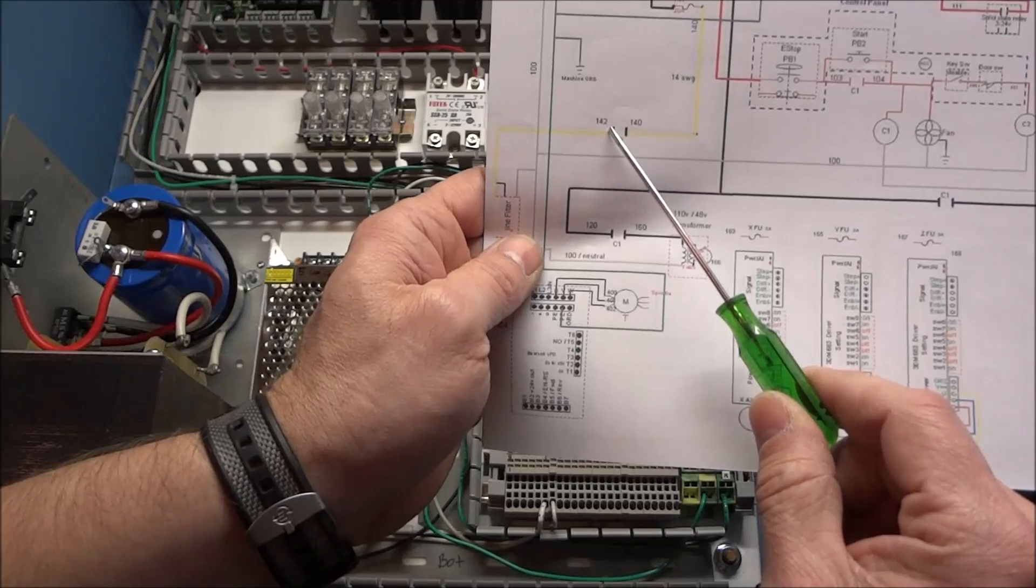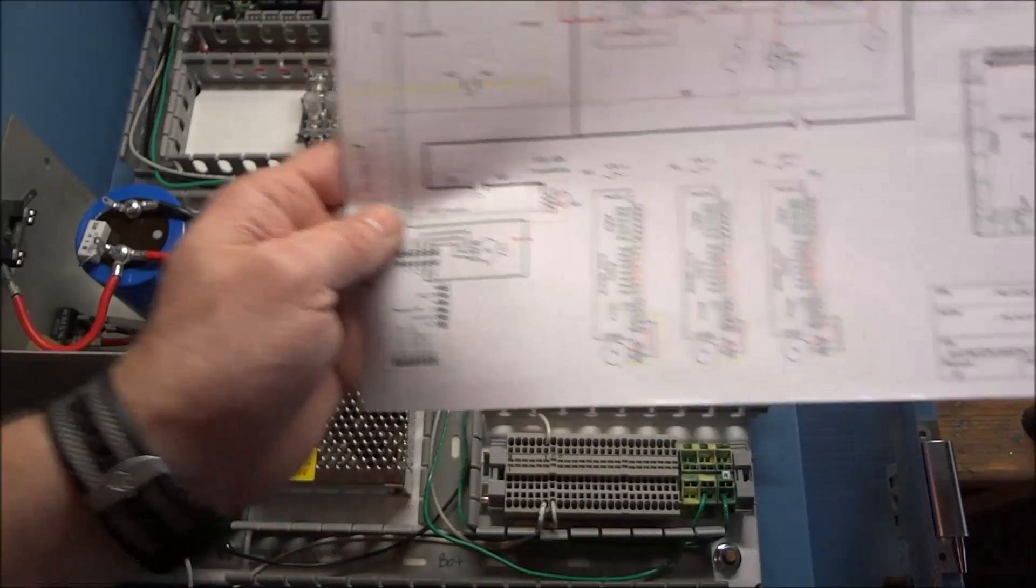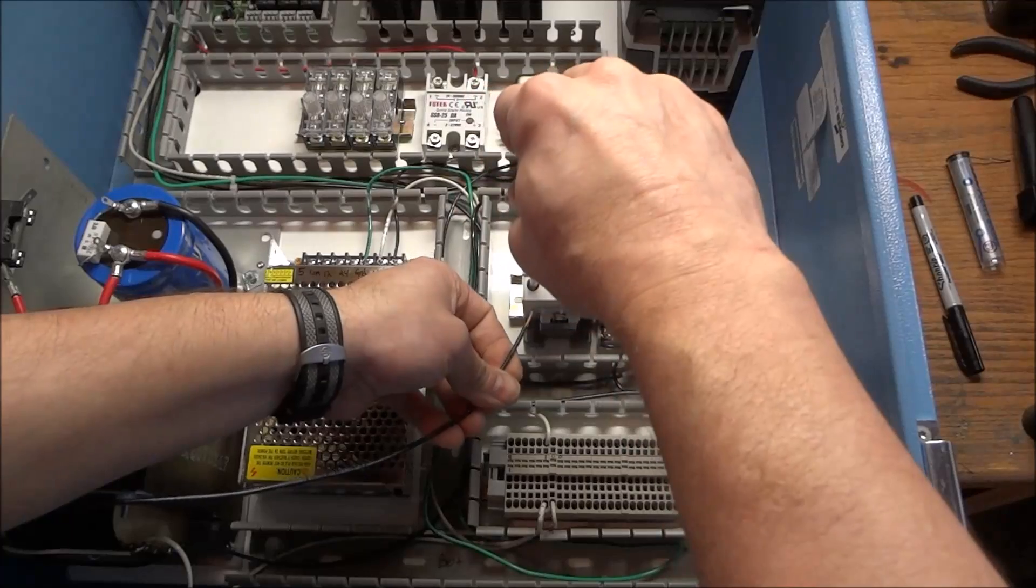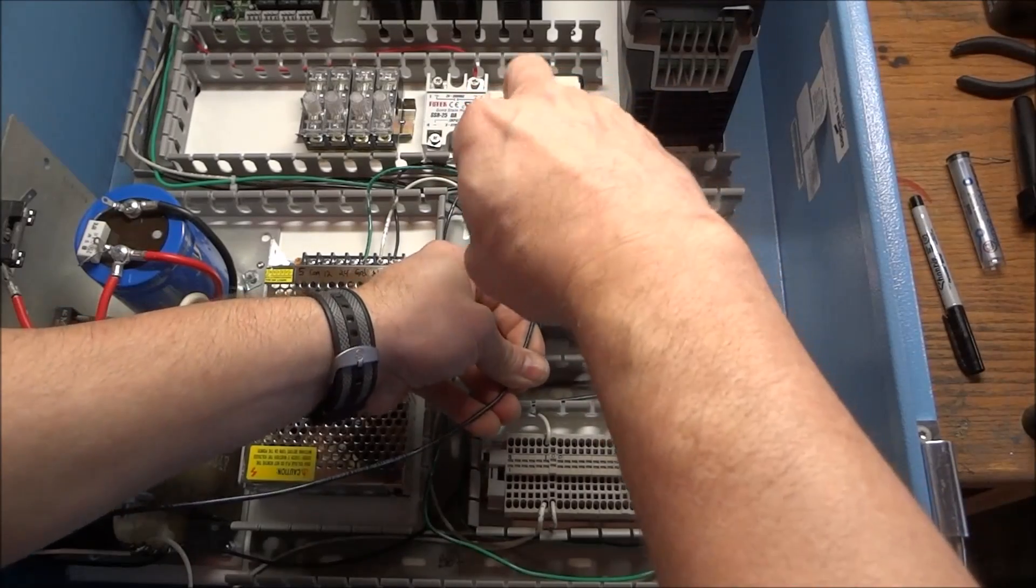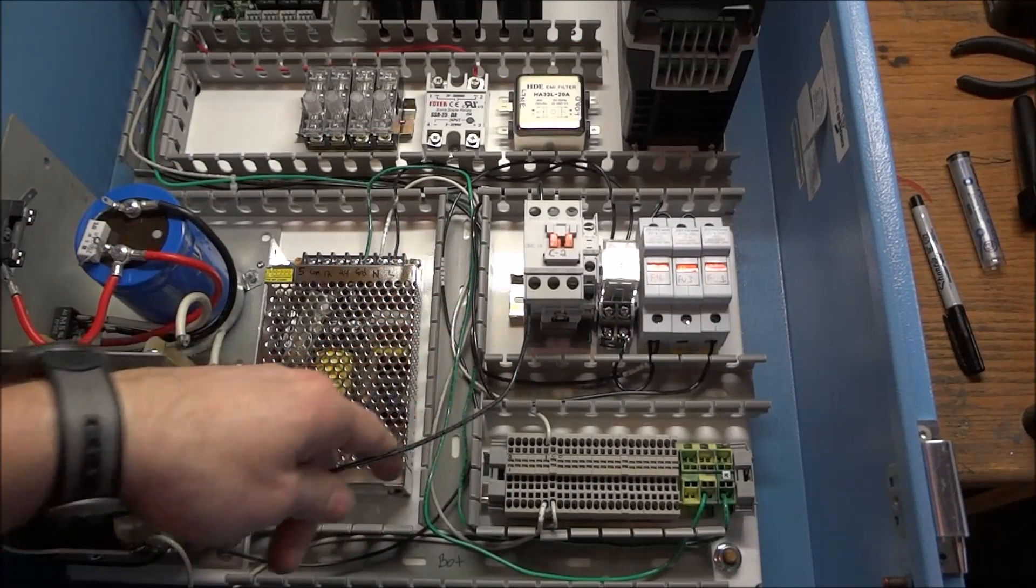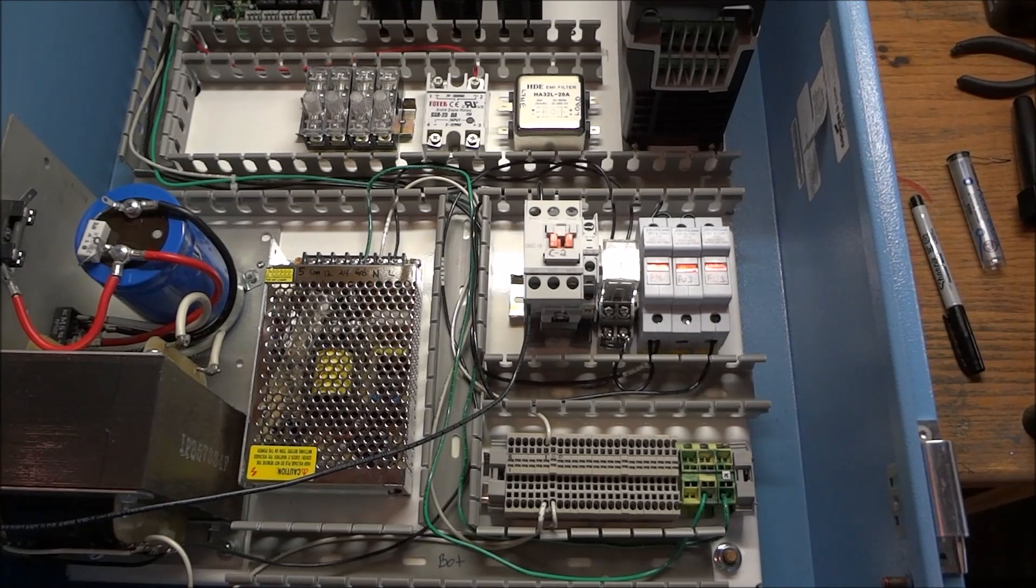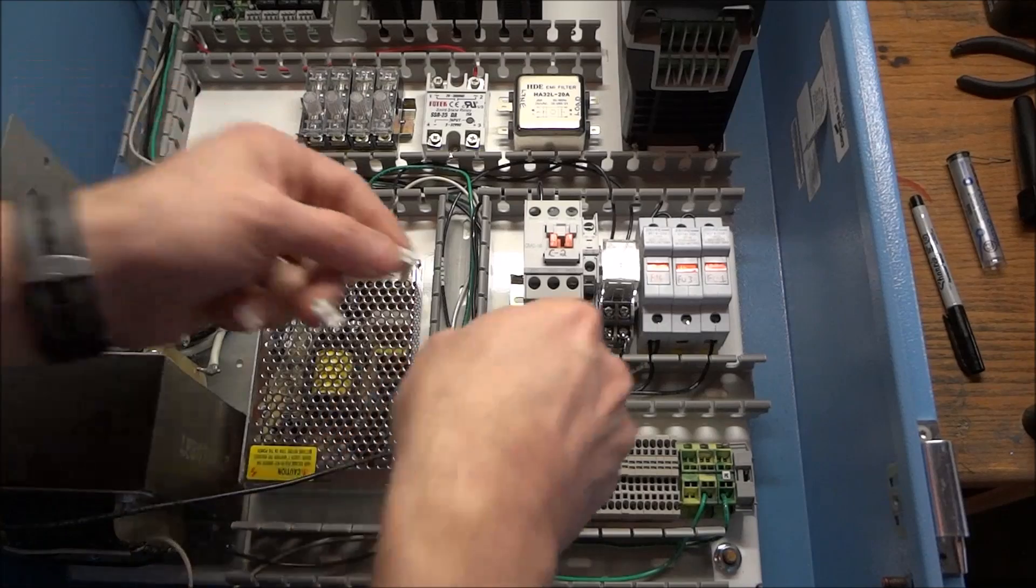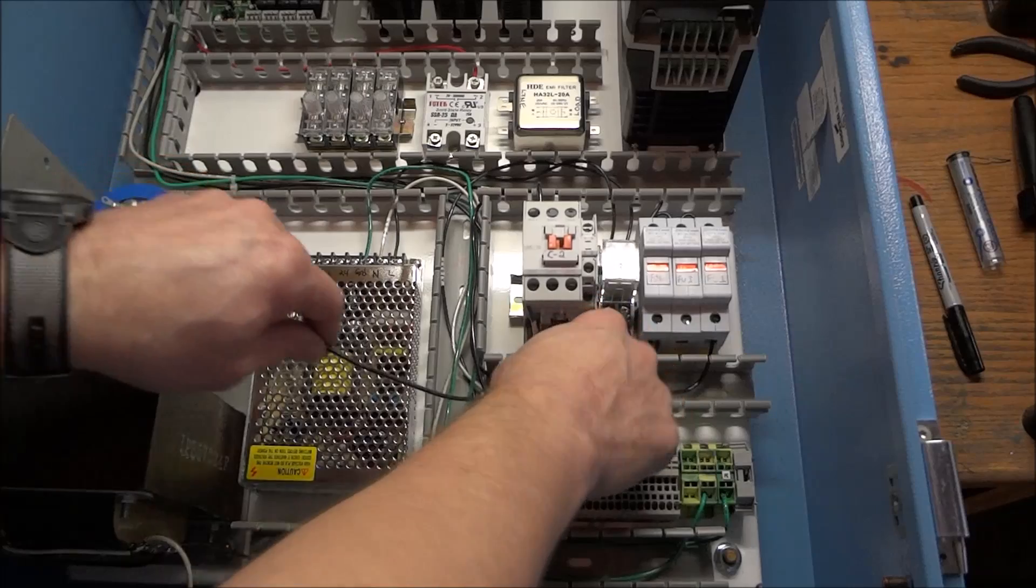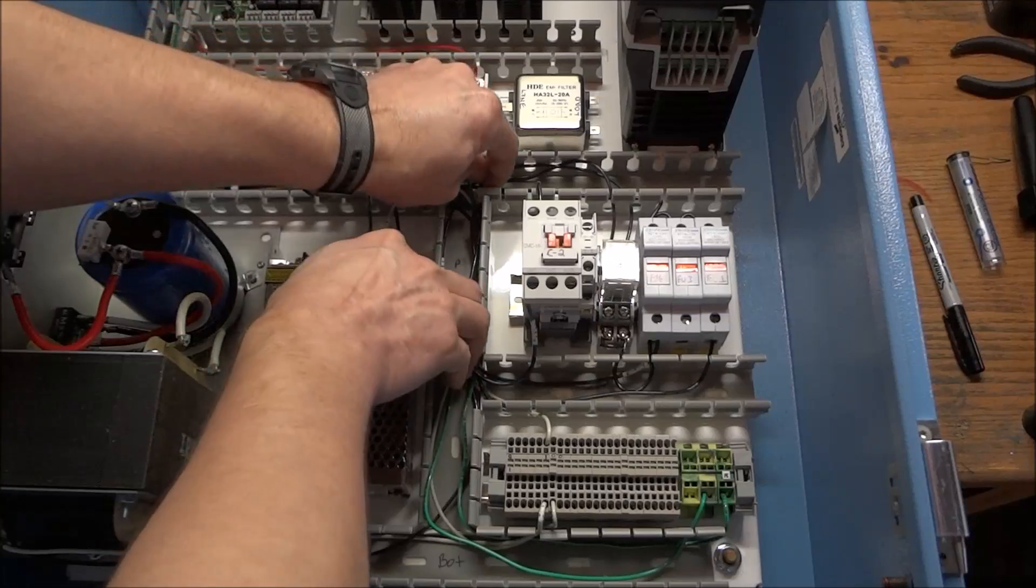And then we want to come out of C2 and over to our line filter. Come out on terminal 1. That is wire 142. And that's going to go on my line filter.